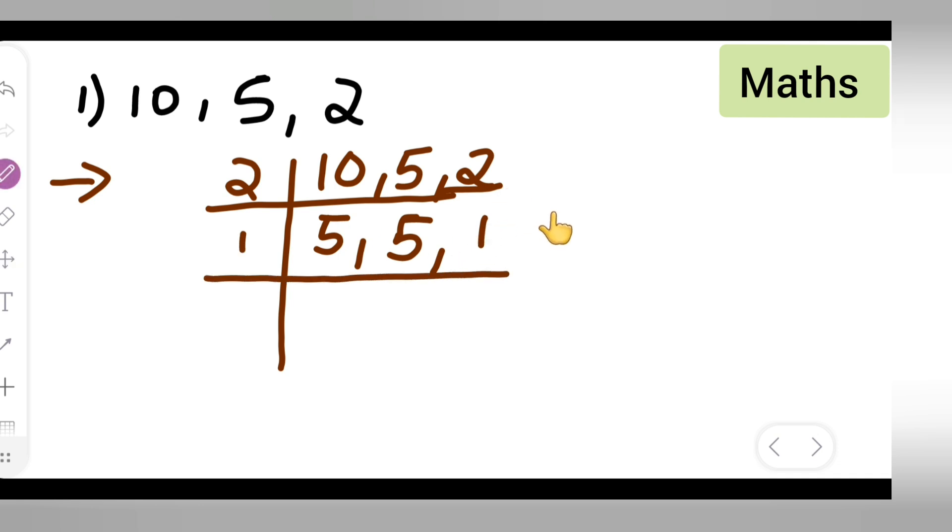Next, what we have is 5. So this is five ones are five, five ones are five, and one keep it as it is. So therefore LCM is equal to 2 multiplied by 5. So what will be the answer? Ten.